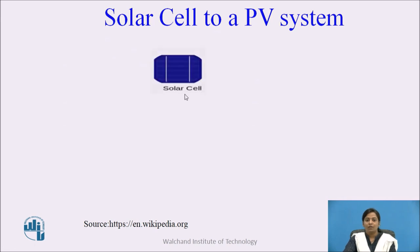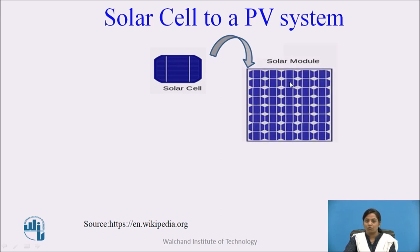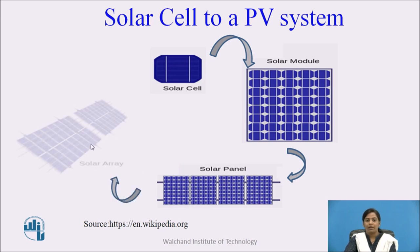A single solar cell, through different combinations, forms a solar module. By using different combinations of solar modules, there is a solar panel. And by using different combinations of solar panels, there is a solar array.